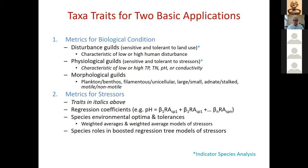One classic approach is using the percent reference or tolerant taxa — those characteristic of low and high disturbance, which we call disturbance guilds. These reflect sensitivity to human activities and are typically developed using indicator species analysis.